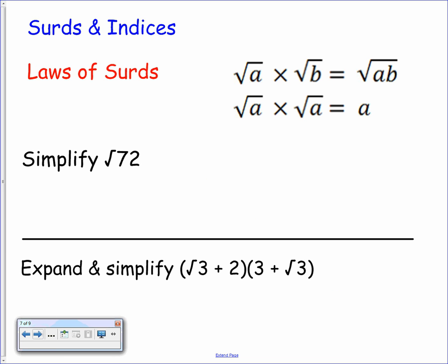That now brings us on to surds and indices. We'll start off with the laws of surds. You have two rules that you will have seen before. Two surds multiplied together, root a times root b, simply gives us the root of ab where we multiply a and b together. If you have root a times root a, or squaring a surd, we're simply just left with that value of a that was underneath it.